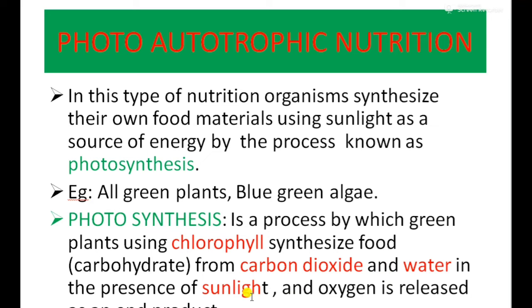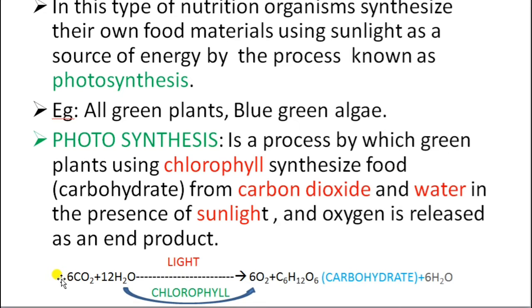The equation for photosynthesis is: 6CO₂ + 12H₂O, in the presence of sunlight and chlorophyll, are converted into carbohydrate — that is, glucose — and oxygen is liberated as an end product. Here, oxygen is formed from the water molecule, not from carbon dioxide. This was proved using isotopic oxygen.